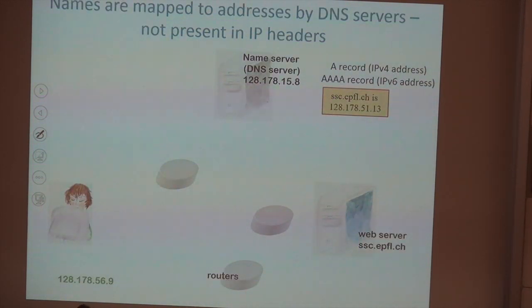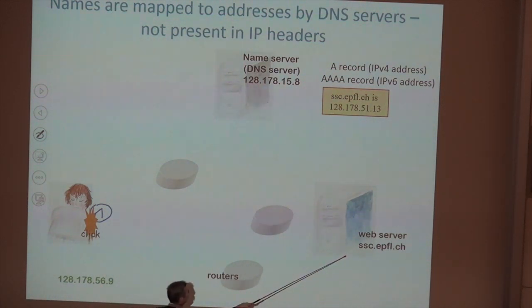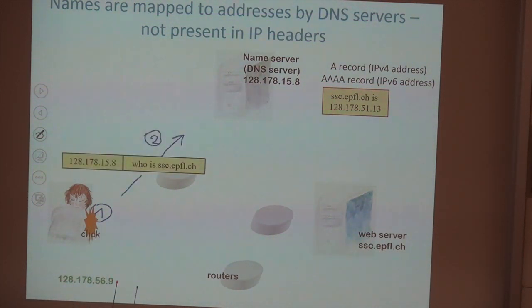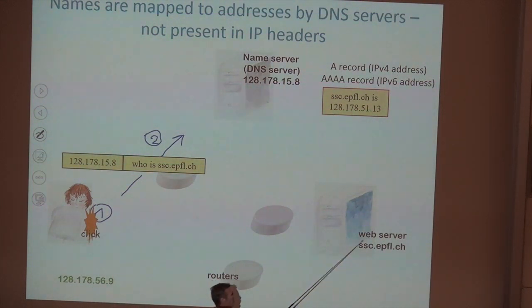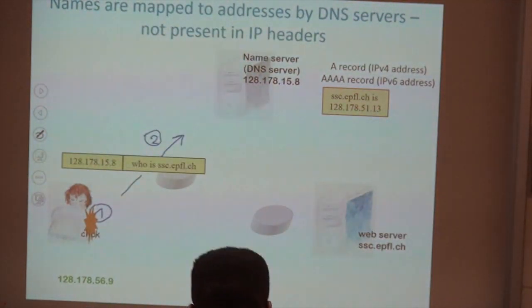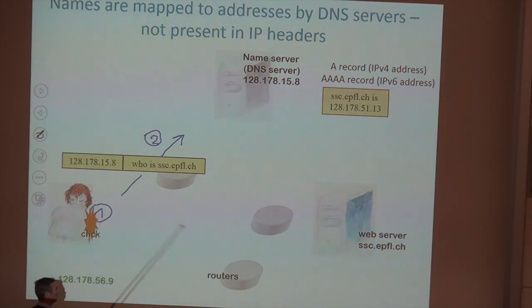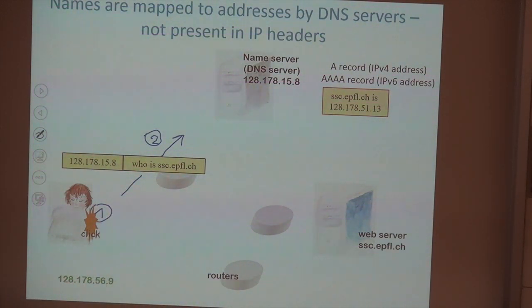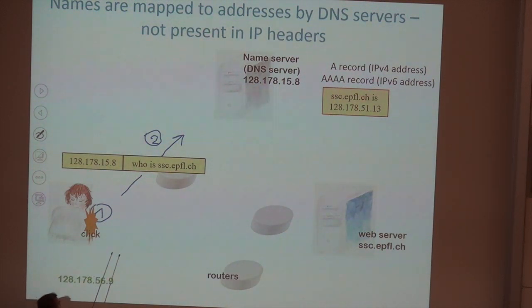One important thing to realize is what happens with names. For example, if I click on ssc.epfl.ch in a document, my computer is not able to send IP packets to the web server using the name — that's the first important thing to remember. Routers don't see names; they see only IP addresses. So if I want to connect to this web server, I need first to do what is called a mapping — finding what IP address is behind this name — using what is called the DNS, Domain Name System, which is perhaps the most important infrastructure of the internet today. EPFL has, for example, one DNS server.